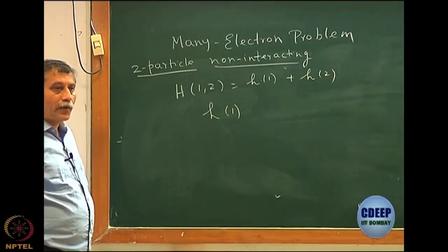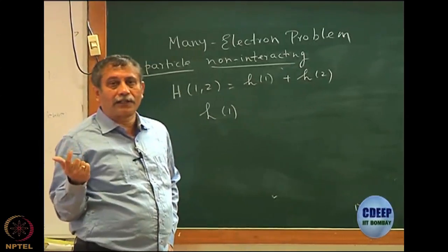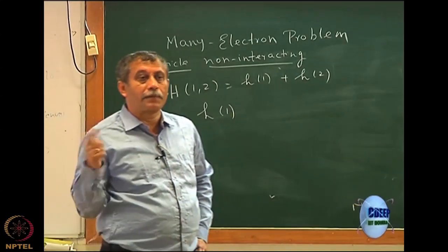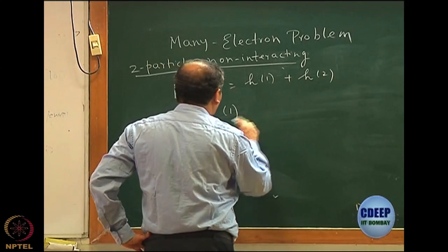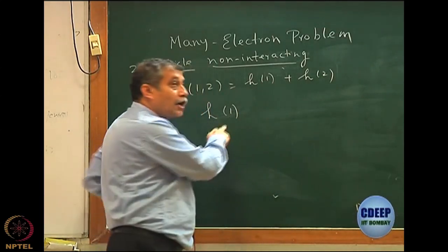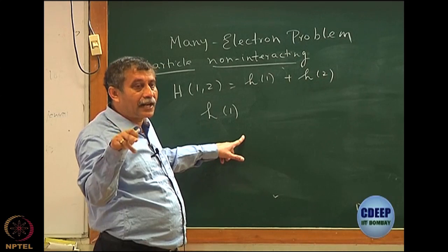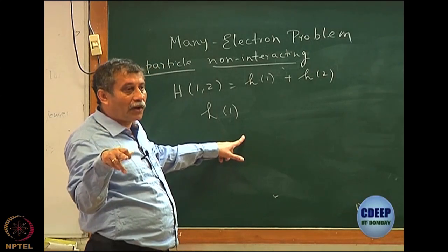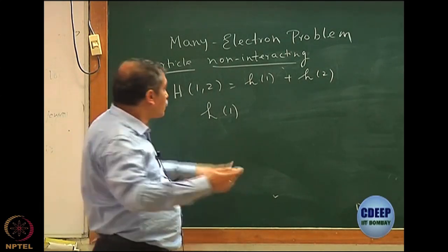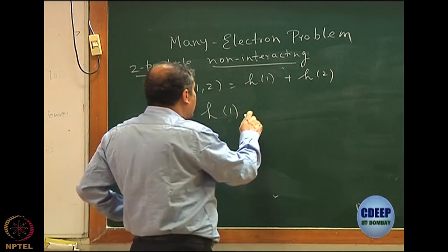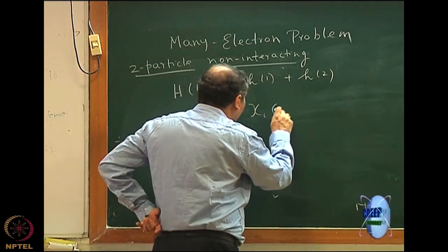Electrons have spin. Whenever you talk of an electron eigenfunction, we have to talk in terms of spin as well. Let us say the eigenfunction of H of 1, although H need not contain spin — H may be only a function of space coordinates. Electrons still have to be attached on that space wave function with a spin alpha or beta. We will call these orbitals or spin orbitals.